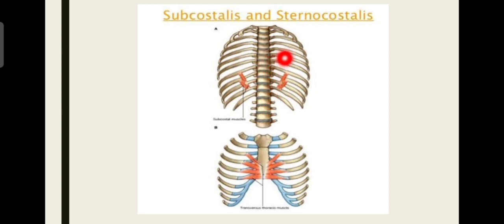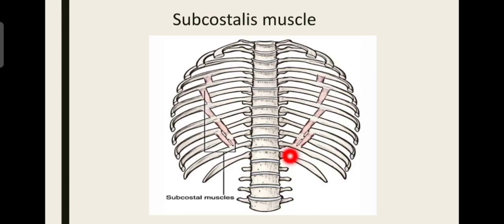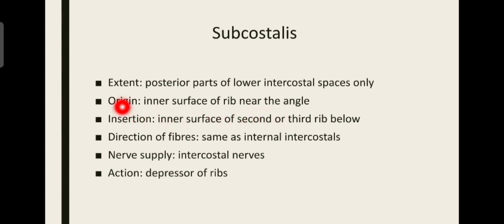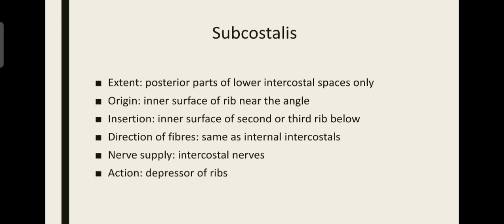Subcostalis extends along the posterior part of the lower intercostal spaces. Only in the lower intercostal spaces can we see this muscle. Its origin is the inner surface of the rib near the angle, and its insertion is the inner surface of the second or third rib below, near the angle of the rib. So it originates from one rib and, leaving that rib, goes to another rib. The nerve supply is by the intercostal nerves. Its action is depression of the ribs and it also helps in inspiration.